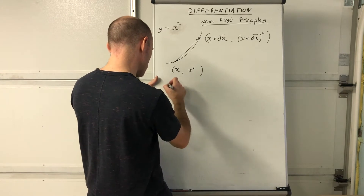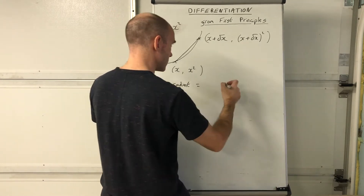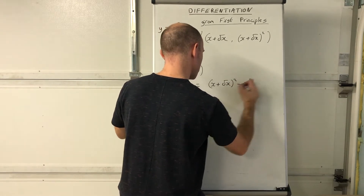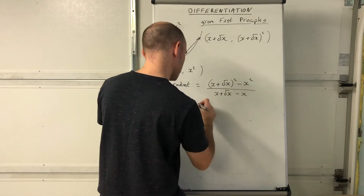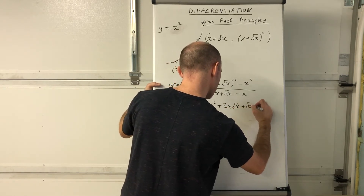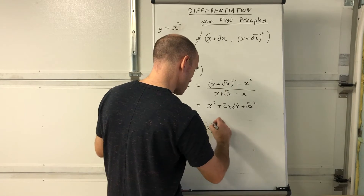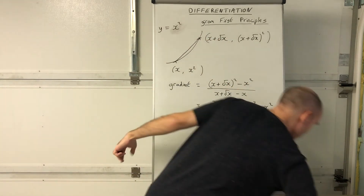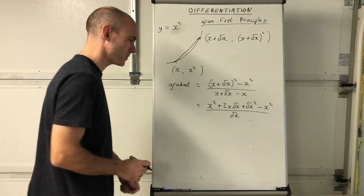We find the gradient as the difference in y-coordinates divided by the difference in x-coordinates: (x + delta x)² minus x², all over (x + delta x) minus x. Expanding the brackets gives x² + 2x·delta x + delta x² minus x², and the denominator is just delta x. That's our expression for the gradient.